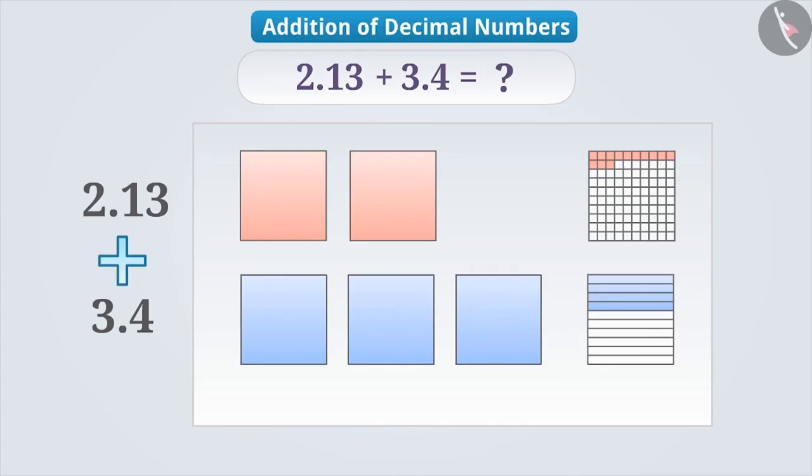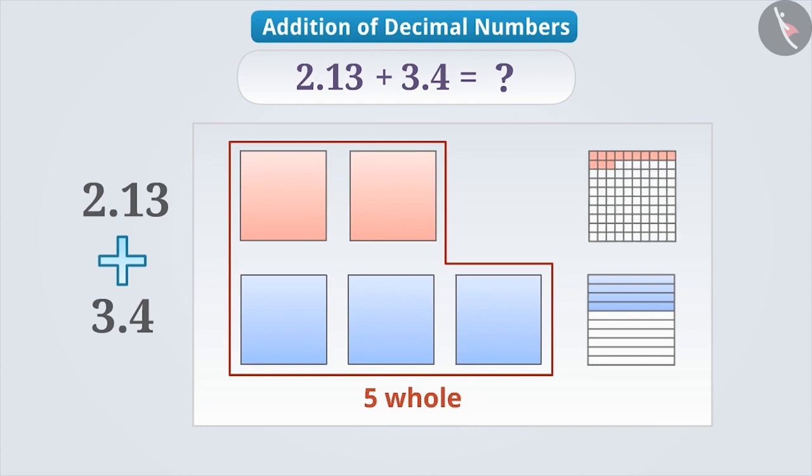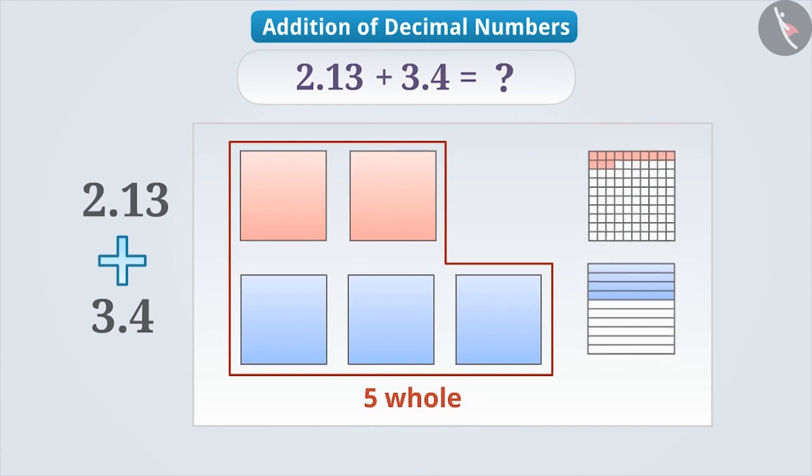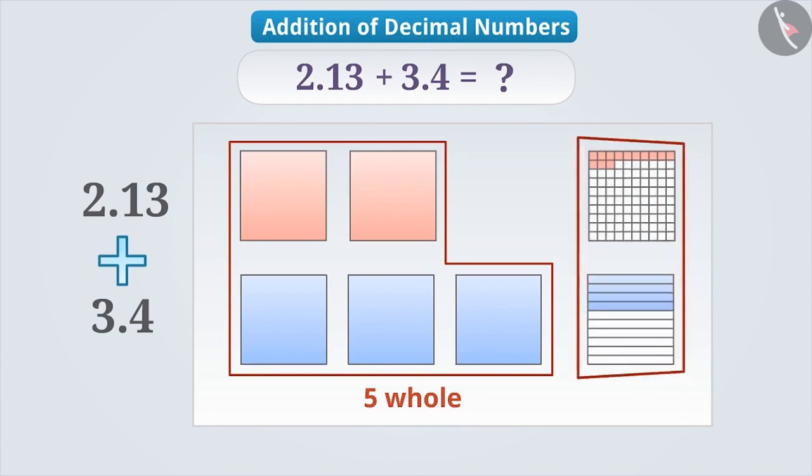Now let's add them. As you can see, there are two wholes and three wholes. Therefore, we can say that there are five wholes in total. Now let's add 13 hundredths and four tenths. Can you tell me how to do this? Think for a while.